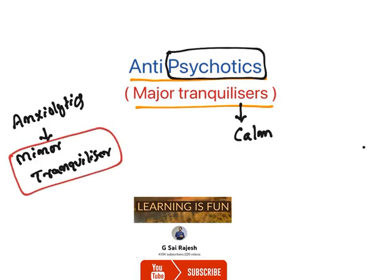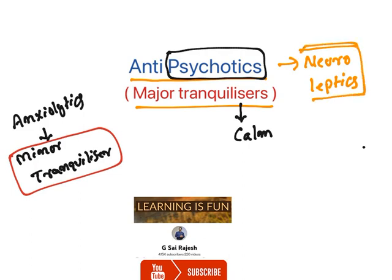Antipsychotics are also known as neuroleptic drugs. 'Neuro' means brain or CNS, and 'leptics' means to take control. When these drugs are taken, they take control of the brain, hence they are known as neuroleptics.